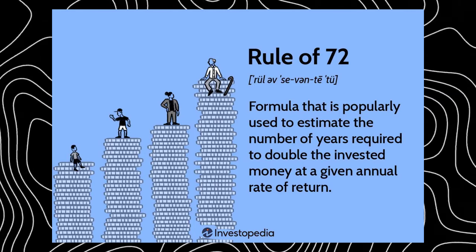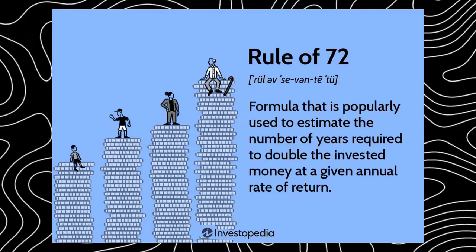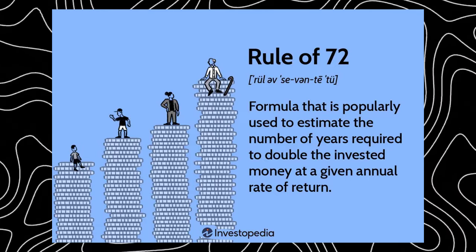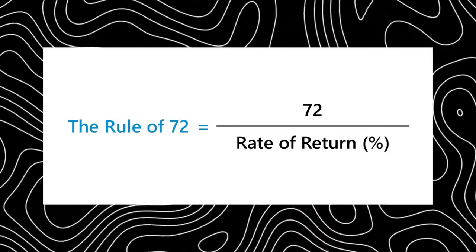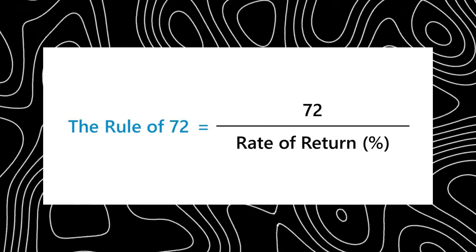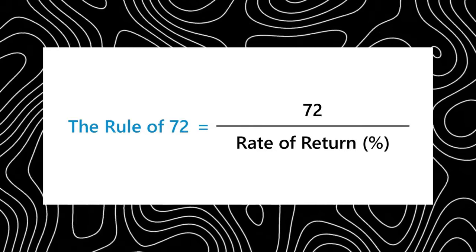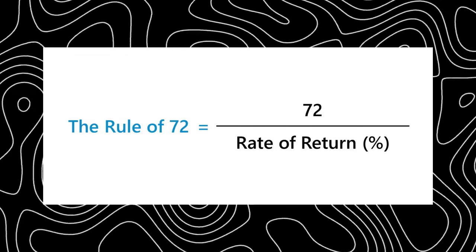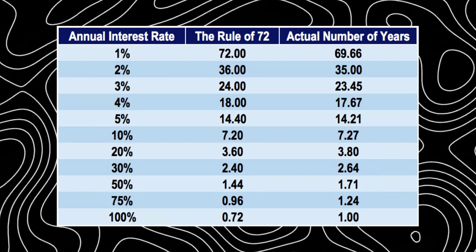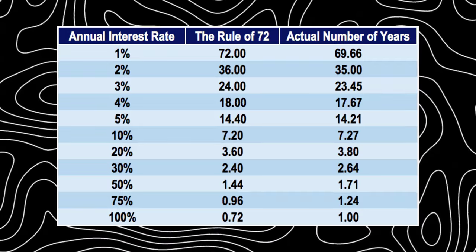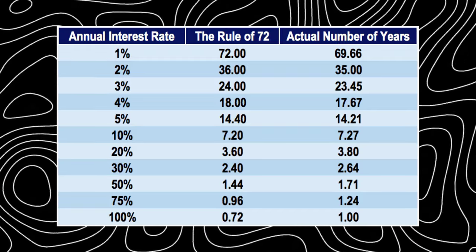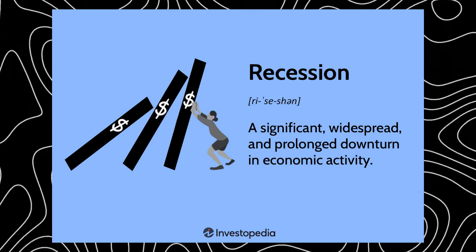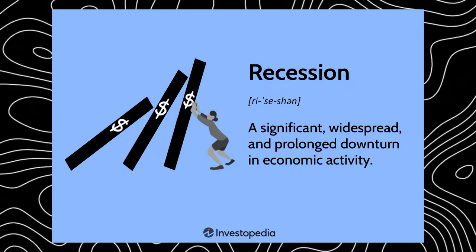Rule of 72: this is a simple formula to estimate how many years it takes to double your investment given an annual rate of return. By dividing 72 by your investment's annual rate of return, you can gauge roughly how long it will take to grow your initial investment. For example, with a 10% annual expected rate of return, it would take about 7.2 years to double your money. This highlights the power of compounding interest.